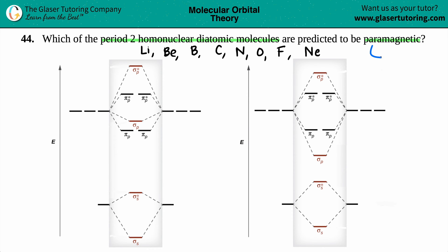Paramagnetic just means that you have at least one unpaired electron. I don't care if you have two unpaired or three unpaired — it doesn't matter. Just as long as you have one unpaired electron, you are automatically going to be classified as paramagnetic. The unpaired electron is the lonely electron that looks like this — just one, not a pair.